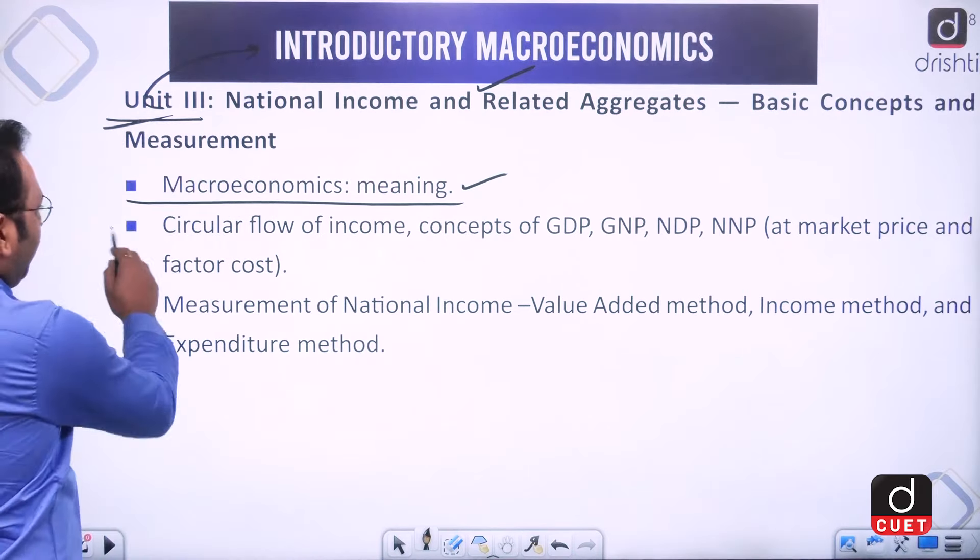Unit six is about government budget and the economy. A budget is a record of estimated expenditures and receipts for the upcoming financial year. We will study the meaning and components of the government budget, including who presents it and how it relates to the constitutional provision under Article 112 — the annual financial statement.